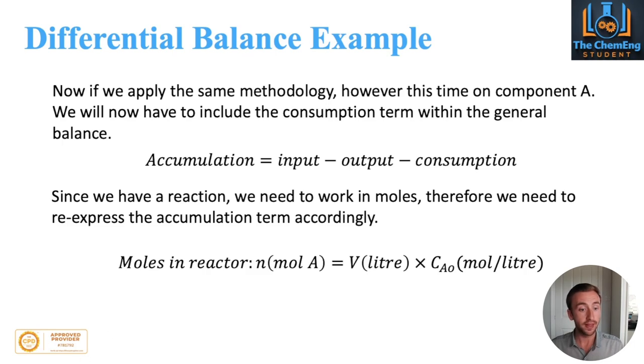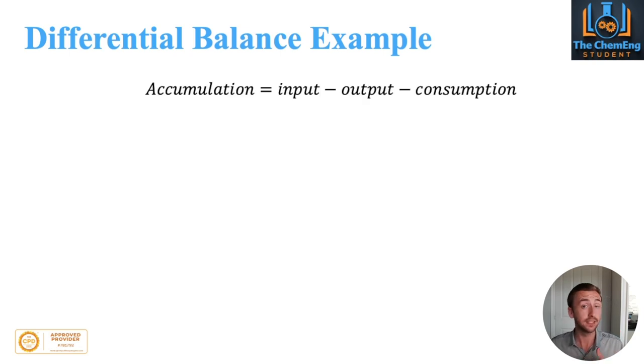What we need to do is re-express our accumulation term. Previously it was in terms of mass, here it's now in terms of moles. We say the moles of A in the reactor would be the volume multiplied by the concentration of A, so VC_A. That's the key distinction. Now dn/dt can be a function of dV and dC_A/dt because the concentration will change with respect to time and the volume will change with respect to time. Hence transient processes.